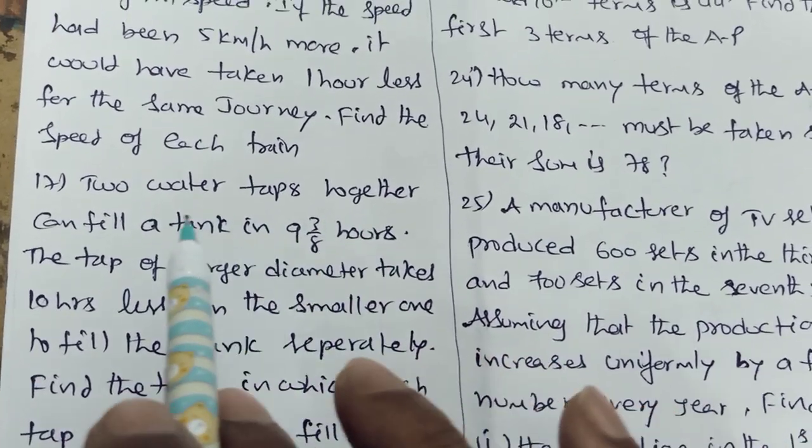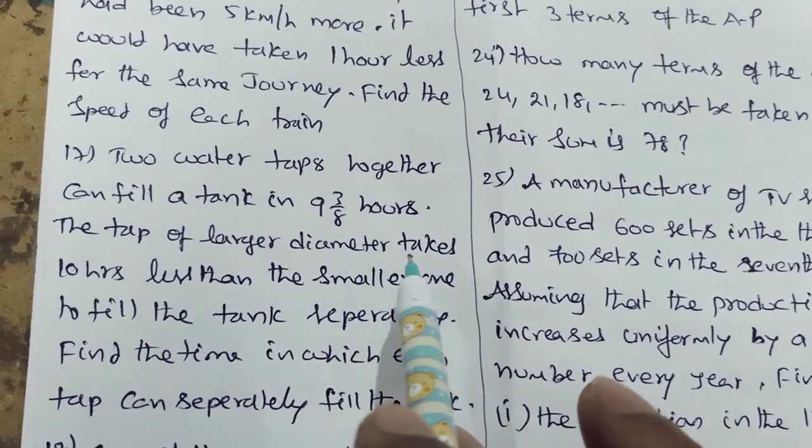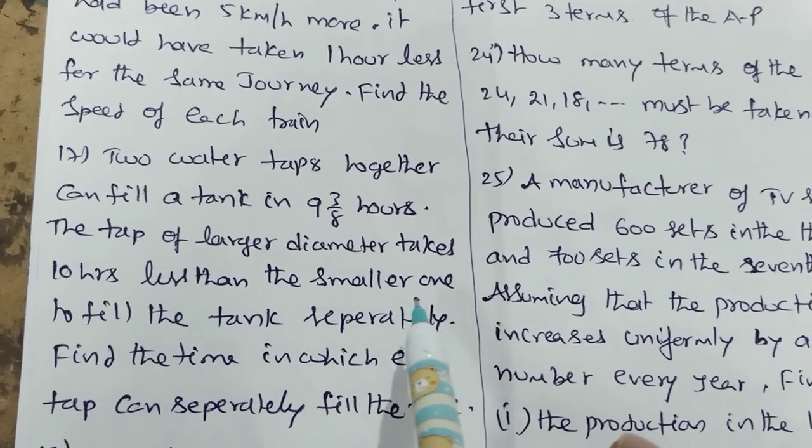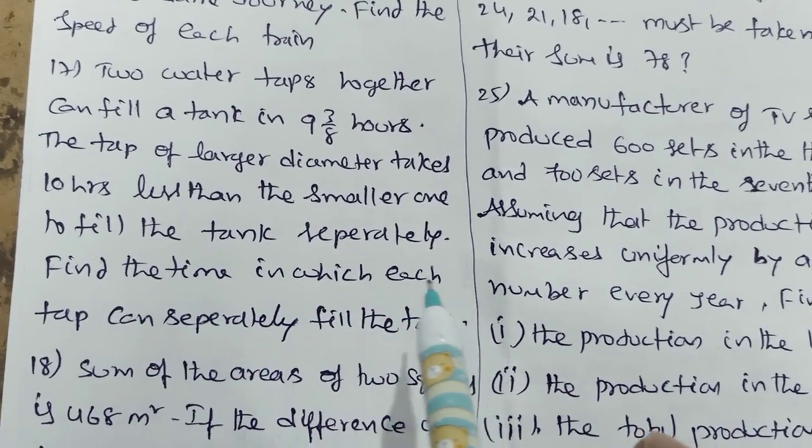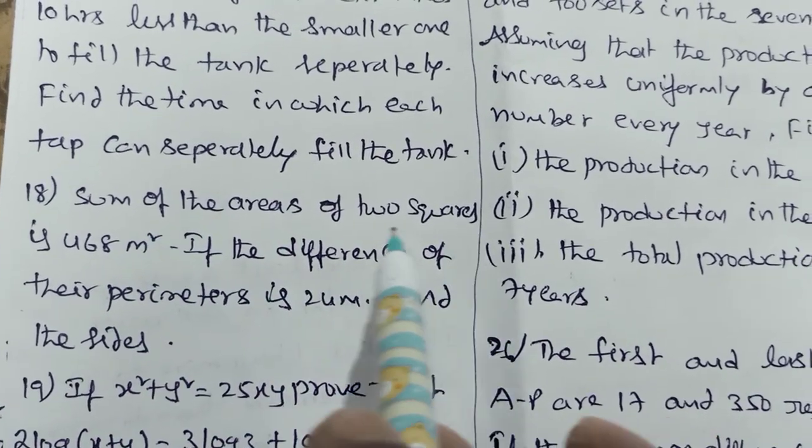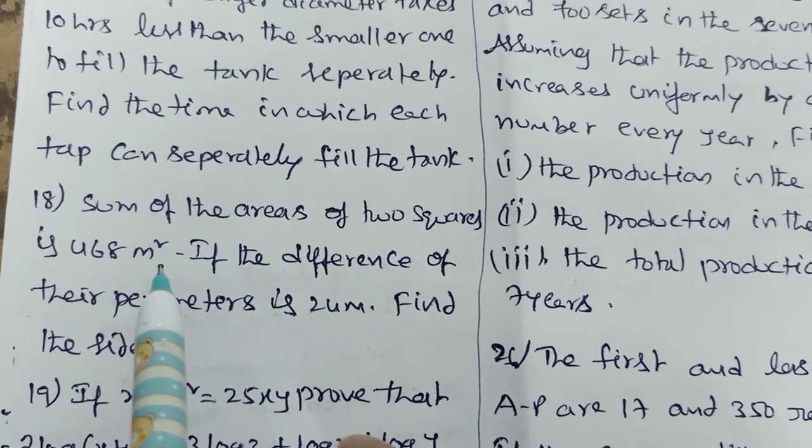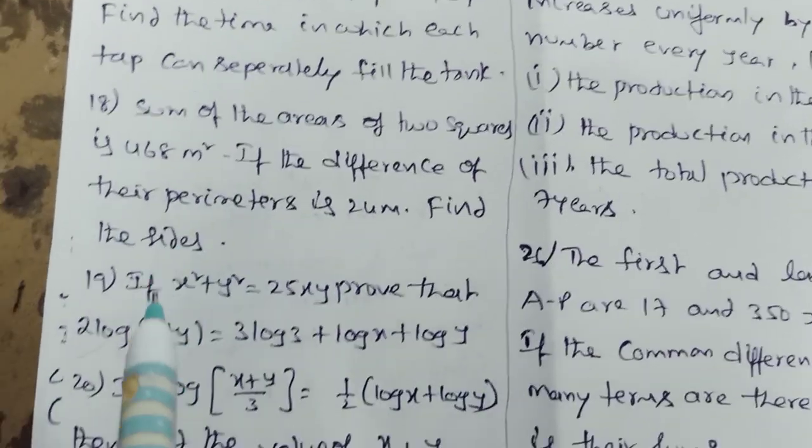Two water taps together can fill a tank in 9 and 3 by 8 hours. The tap of larger diameter takes 10 hours less than the smaller one to fill the tank separately. Find the time in which each tap can separately fill the tank. Sum of the areas of 2 squares is 468 m square. If the difference of their perimeters is 24 m, find the sides.